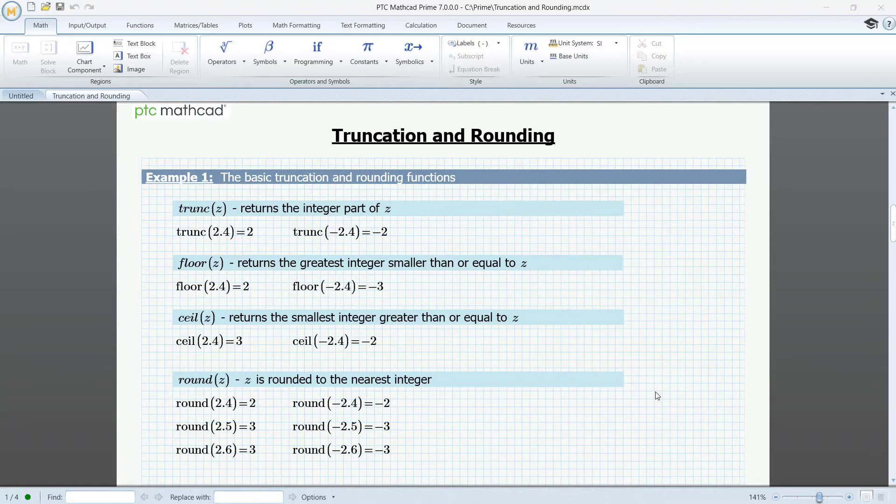In their simplest form, they will all map to an integer. Trunc will just return the integer part of a real number.